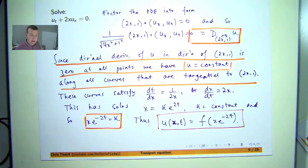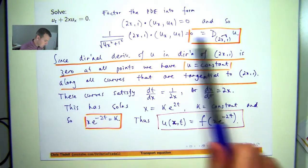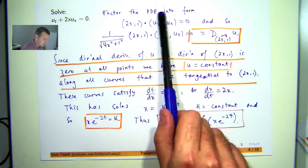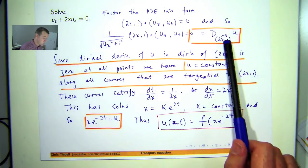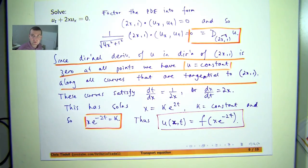So the important aspect there was, we could factor the PDE down to a dot product, turn it into a directional derivative and show that the directional derivative is zero. Then we could conclude that u is constant along certain curves that are tangential to this vector (2x, 1).